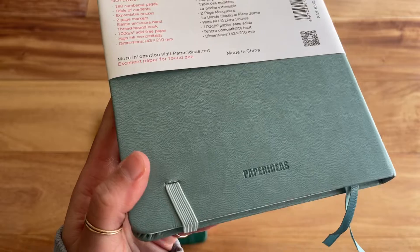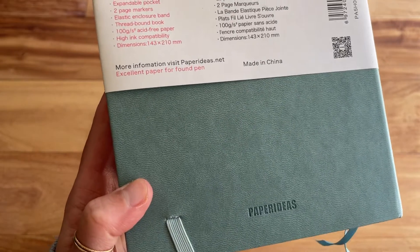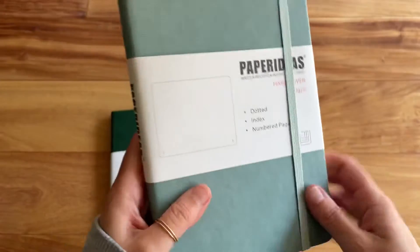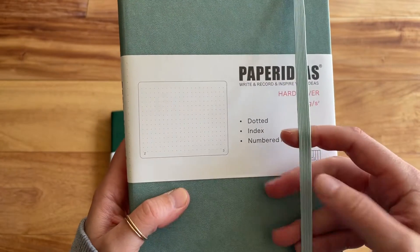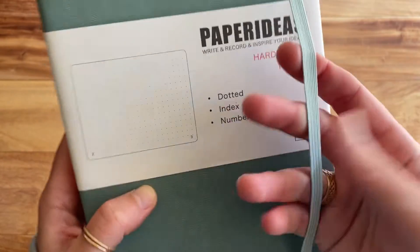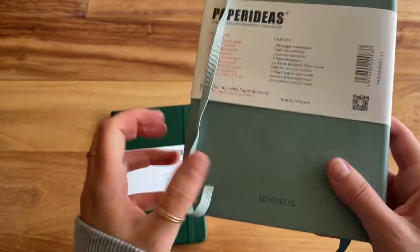It has the Paper Ideas embossed into it and some information on the journal. And it has a really nice sturdy elastic. It feels like really nice quality. Here's the back of it.